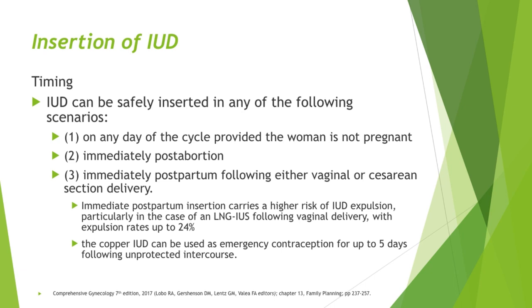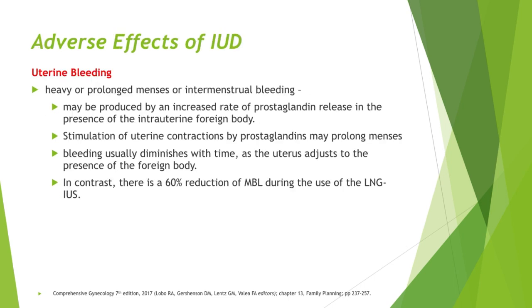The copper IUD can be used as emergency contraception for up to five days following unprotected intercourse. Regarding adverse effects, the patient may experience heavy or prolonged menses or intermenstrual bleeding, which may be produced by an increased rate of prostaglandin release in the presence of an intrauterine foreign body. Bleeding usually diminishes with time as the uterus adjusts. In contrast, for the Mirena or LNG-IUS, there is usually a 60% reduction in menstrual blood loss.